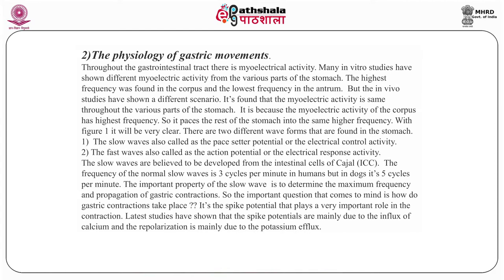With figure 1 it will be very clear. There are two different waveforms found in the stomach. First is the slow waves, also called the pacesetter potential or the electrical control activity. The second is the fast waves, also called the action potential or the electrical response activity. The slow waves are believed to be developed from the interstitial cells of Cajal (ICC). The frequency of normal slow waves is 3 cycles per minute in humans, but in dogs it is 5 cycles per minute. The important property of the slow wave is to determine the maximum frequency and propagation of gastric contraction.